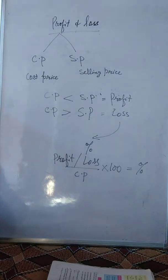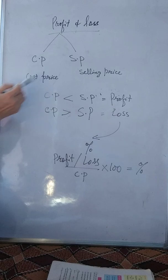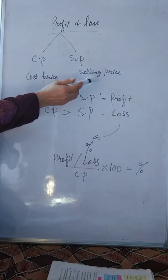Assalamu alaikum children, today we are going to discuss profit and loss. Profit and loss contains CP and SP. CP means cost price, SP means selling price. The amount at which goods are bought, the amount at which goods are sold.